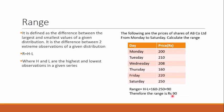Therefore the range of this data is 90. It is clear that we are only considering two extreme values, which means all observations are not taken into consideration. Hence range is a limited measure of dispersion.